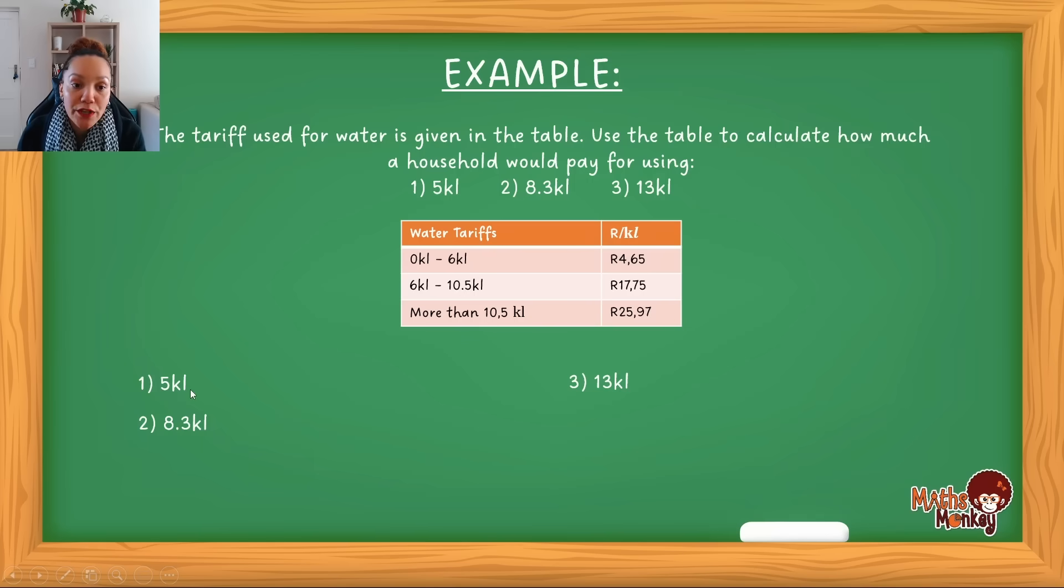So let's actually do the calculations so that you know what I mean. So the first person used 5 kiloliters. So if I look at my table here, you see 5 will obviously fall into this range. So if they use 5 kiloliters and it's 4.65 per kiloliter, then the calculation is simple. Then this household for the month will then have to pay 23.25 rand. That's fairly simple.